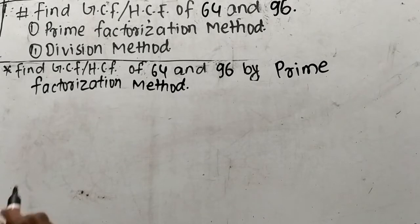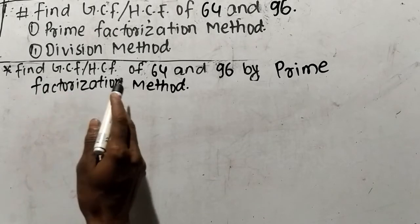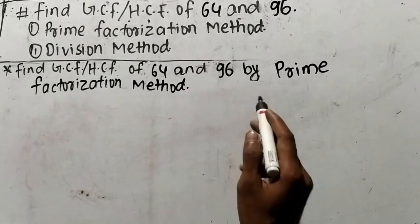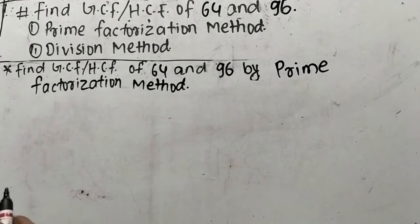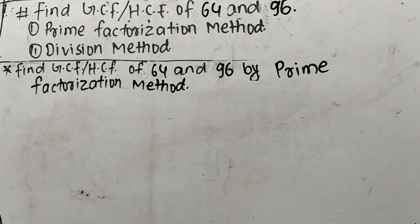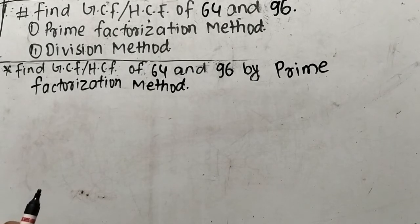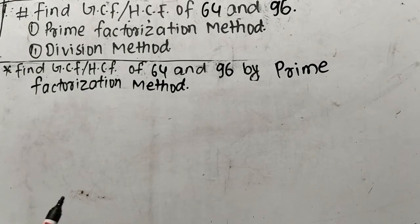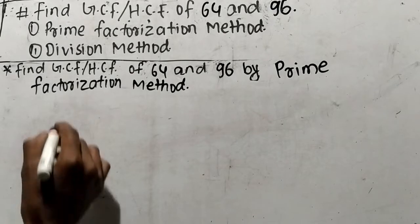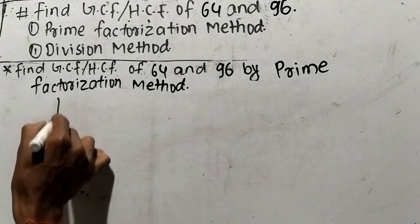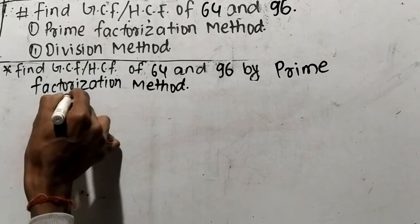Let's find out GCF or HCF of 64 and 96 by prime factorization method. While finding out GCF or HCF by prime factorization method, first of all we have to find out the prime factors of the given numbers. We have numbers 64 and 96, so let's find out the prime factors of 64 first.